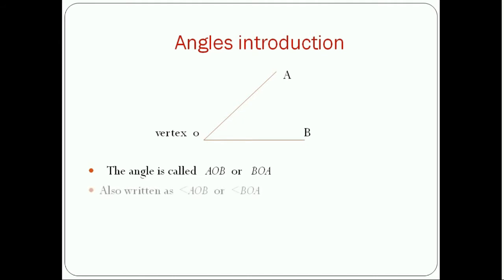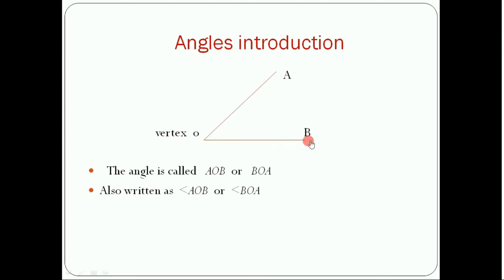Another way to write the angle is angle AOB. Here you can see this is the symbol of angle, and AOB, or this is also the symbol of angle BOA. We can also name the angle as AOB or BOA.